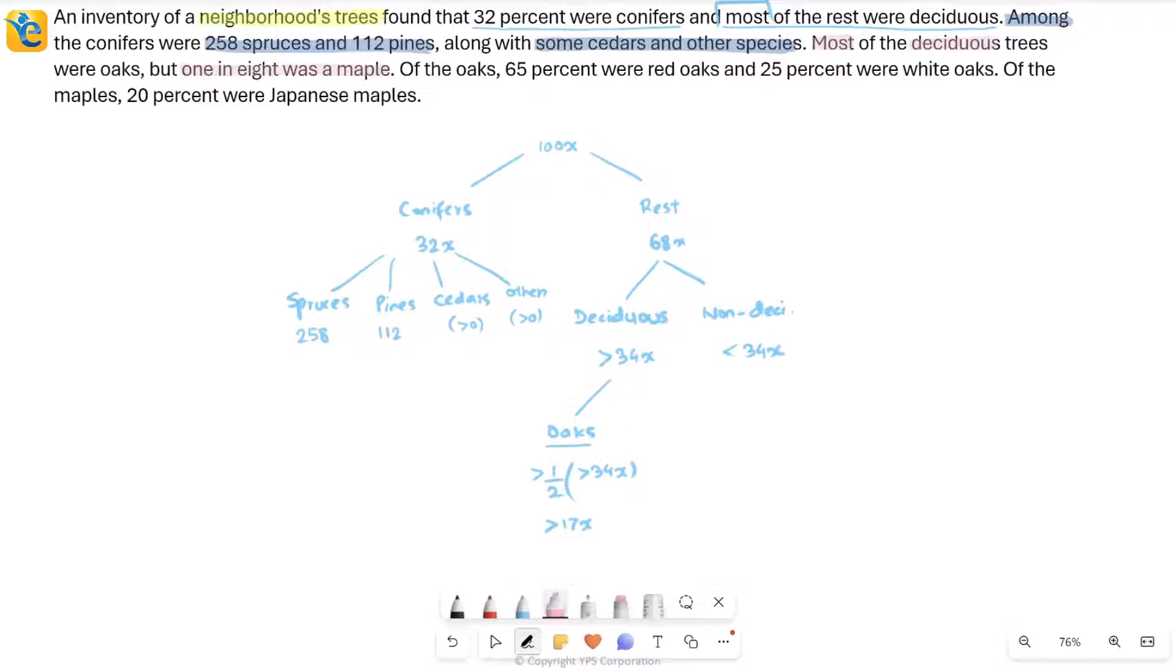And then what else? But one in eight was a maple. So this is when you're talking about the deciduous trees again. So they went into another category here, the maples. And how many? One in eight, which means it's one eighth of this number, which is more than 34X. Again, this is just going to give me an inequality only. I'll leave it as is here. This is how many maples there are.